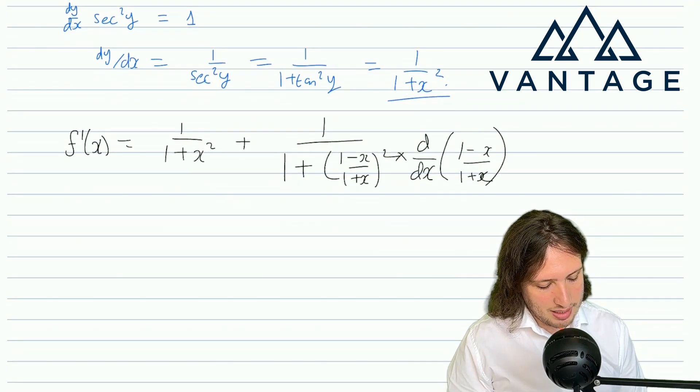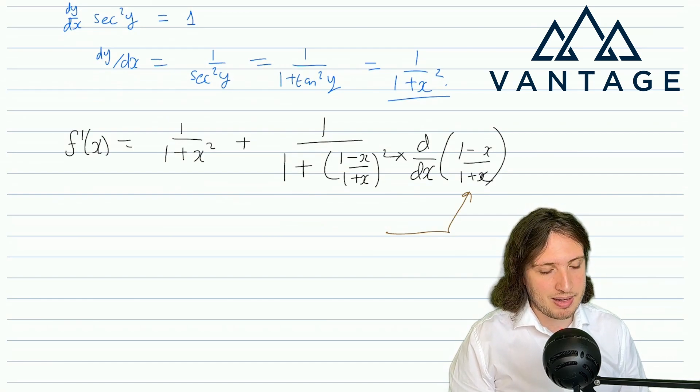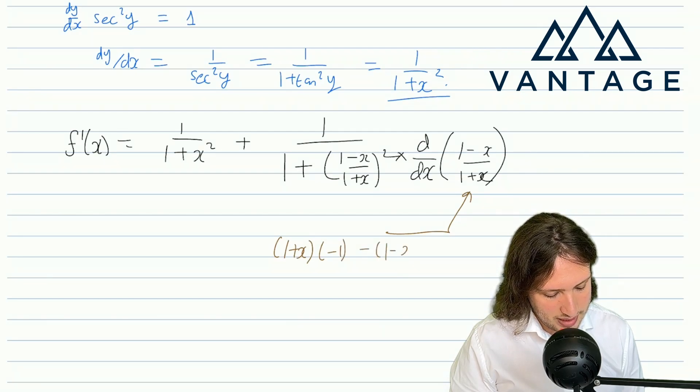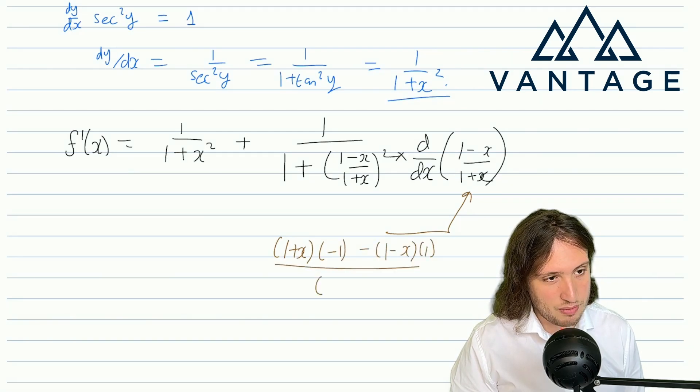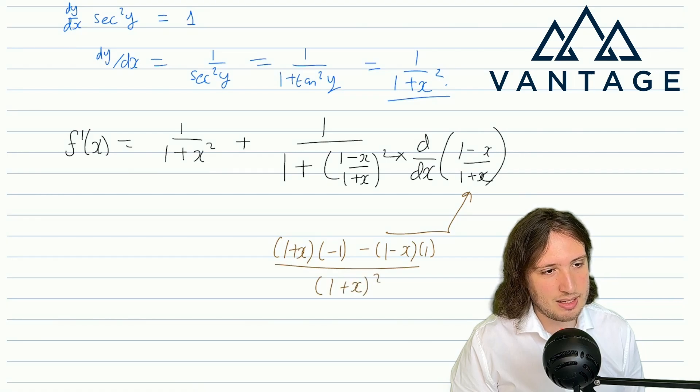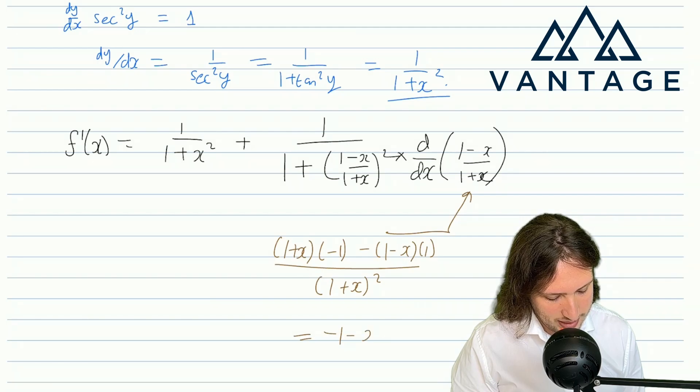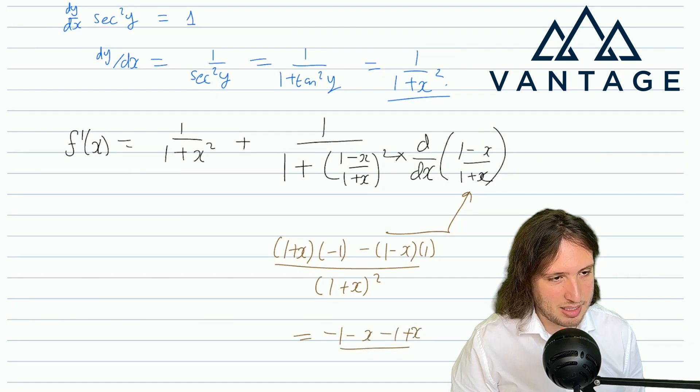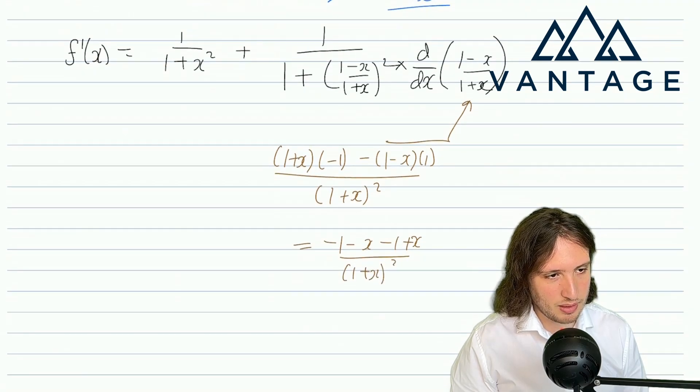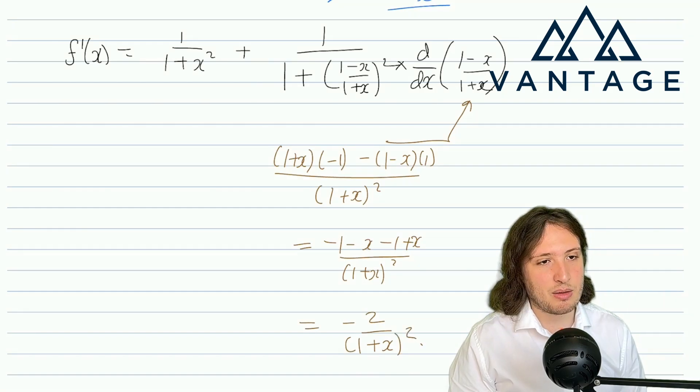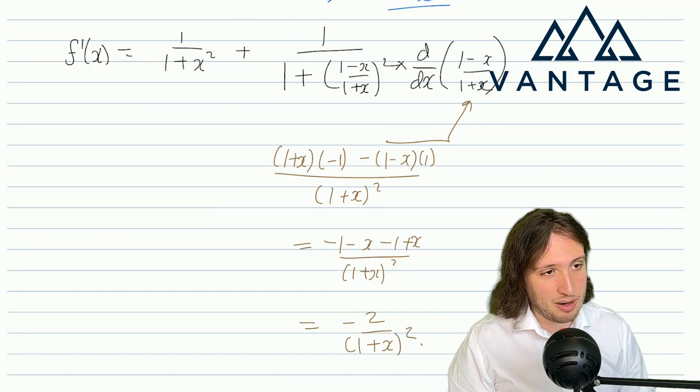Now that derivative there is nothing to fear. We can work it out very easily using the quotient rule. So we get the denominator times the derivative of the numerator minus the numerator times the derivative of the denominator over the denominator squared. And actually that's -1 - (1-x), well let's write this -1 - (1-x) = -1 + x because minus minus makes plus. So that is simply -2/(1+x)².